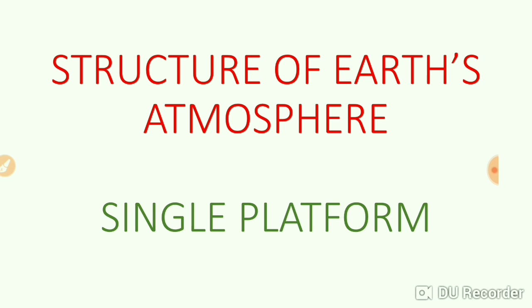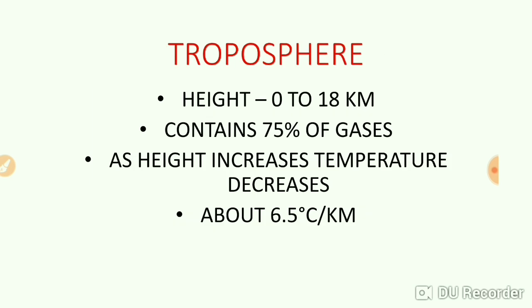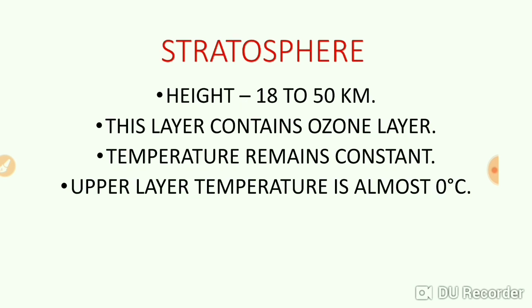First in the series is the troposphere. The height of the troposphere ranges between 0 to 18 kilometers, making it the lowermost layer of Earth's atmosphere. It contains about 75 percent of gases. As height increases, the temperature decreases at the rate of 6.5 degrees Celsius per kilometer.